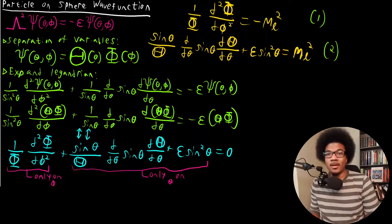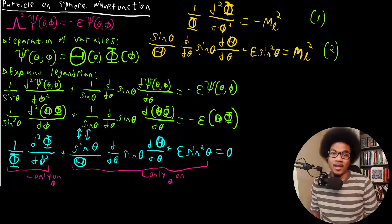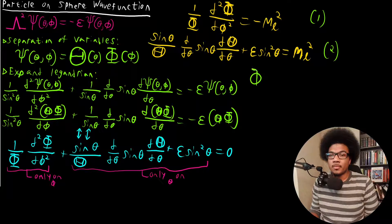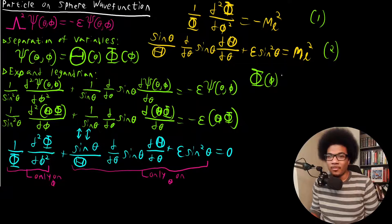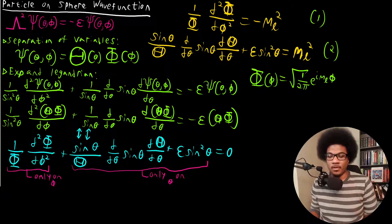Equation one actually looks exactly like the particle on a ring, and so its solutions are exactly the same. For equation one, the function that only depends on phi would be exactly the same as our solution for the particle on a ring: square root of one over two pi, times e to the i M sub L phi.